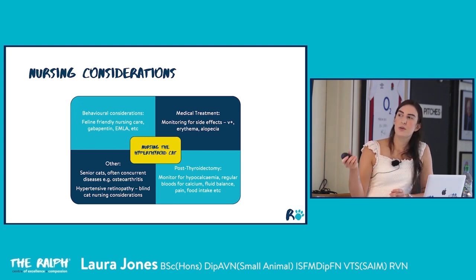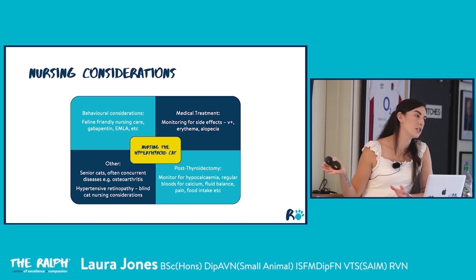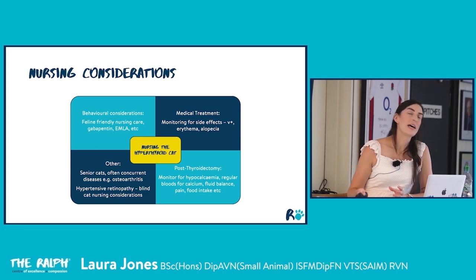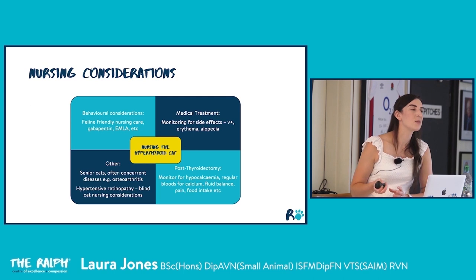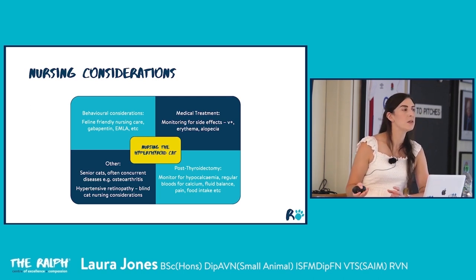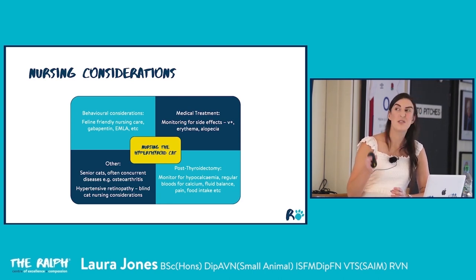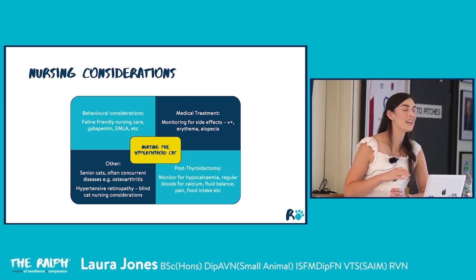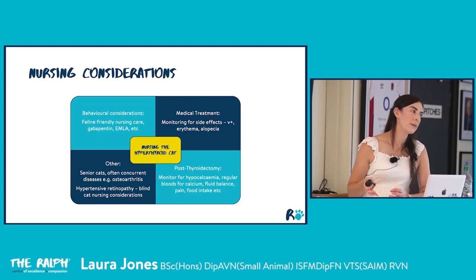If there are hypertension-associated ocular changes, we may have a blind cat in hospital — this changes how we manage them. Ensure key resources like bed, food, water and litter tray are always in the same location in their kennel so the cat always knows where to find them. A map of resource placement on the front of the kennel ensures consistency across different nursing shifts.